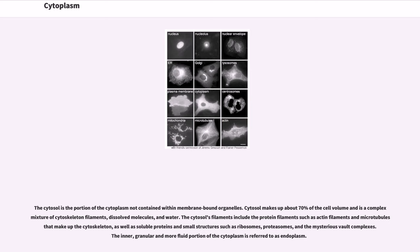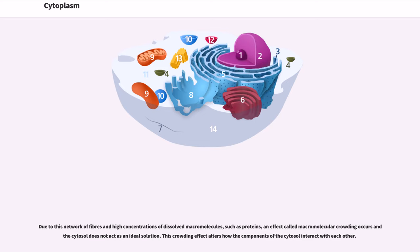The cytosol's filaments include the protein filaments such as actin filaments and microtubules that make up the cytoskeleton, as well as soluble proteins and small structures such as ribosomes, proteasomes, and the mysterious vault complexes. The inner, granular and more fluid portion of the cytoplasm is referred to as endoplasm. Due to this network of fibers and high concentrations of dissolved macromolecules, such as proteins, an effect called macromolecular crowding occurs and the cytosol does not act as an ideal solution. This crowding effect alters how the components of the cytosol interact with each other.